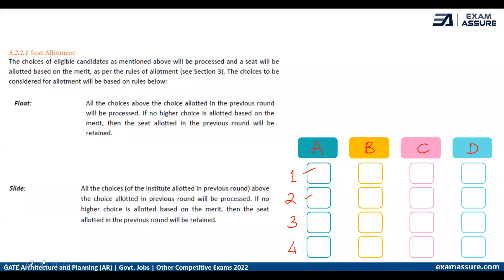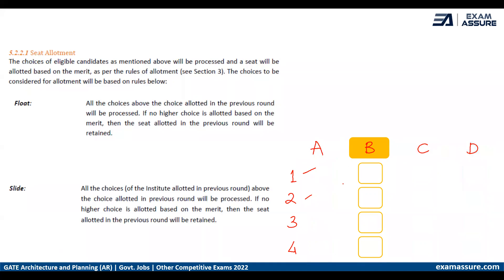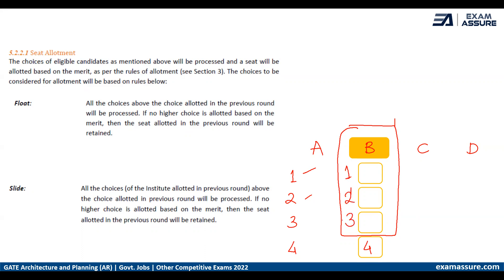Now let us say you are allotted the fourth option from institute B, and you choose to go for slide. What will happen in slide is that when you move to the next round, processing will take place only among the remaining choices of institute B — branch one, branch two, or branch three.